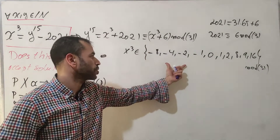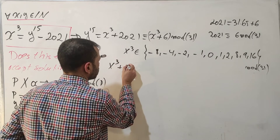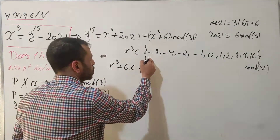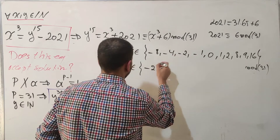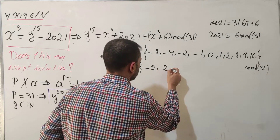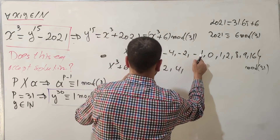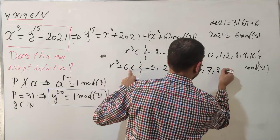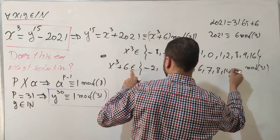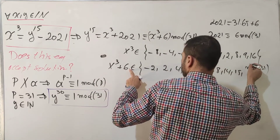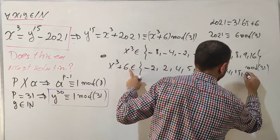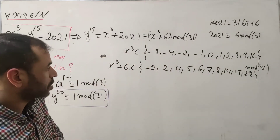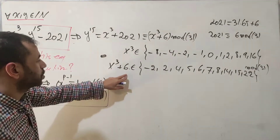Now we add 6 to each of these values to get the possible values of x³ + 6 mod 31. The set becomes: {-2, 2, 4, 5, 6, 7, 8, 14, 15, 22} mod 31. These are all the possible remainders for x³ + 6.